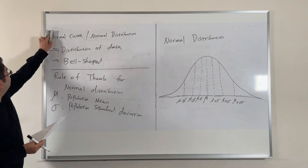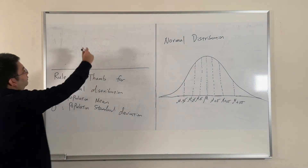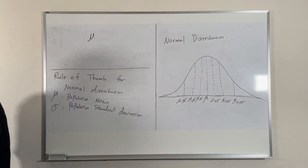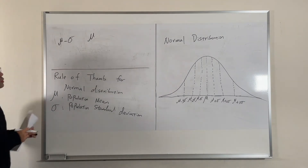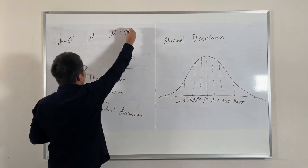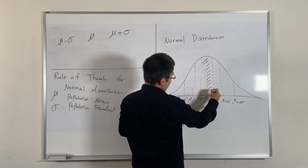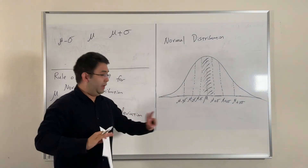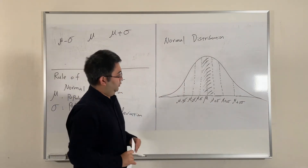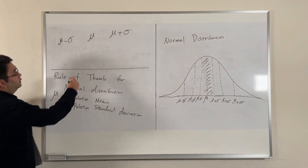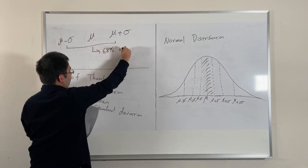With mu being the population mean in the middle, we look at the range from mu minus one standard deviation on the left to mu plus one standard deviation on the right. This applies to all values of mean and standard deviation. The rule of thumb says this range covers 68% of the data points.